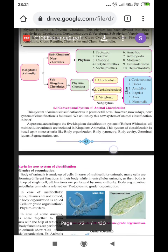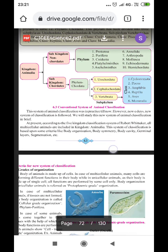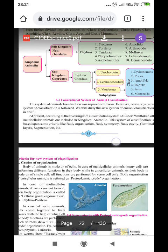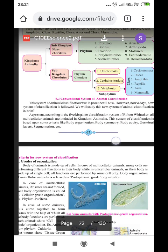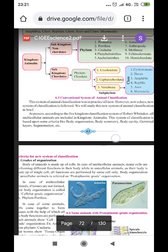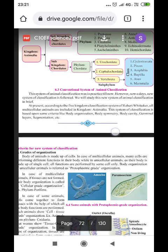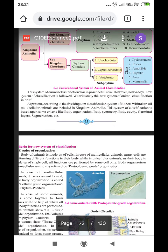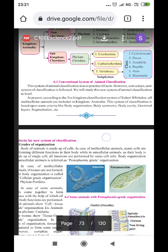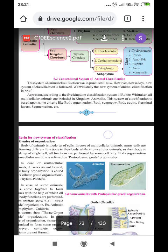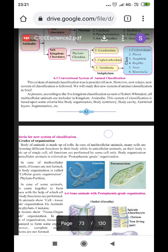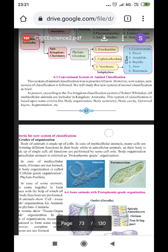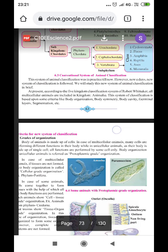This system of animal classification was in practice till now. However, nowadays, a new system of classification is followed, which we will study. At present, according to the five kingdom classification system of Robert Whittaker, all multicellular animals are included in kingdom animalia. This system of classification is based upon some criteria like body organization, body symmetry, body cavity, germinal layers, segmentation, etc.